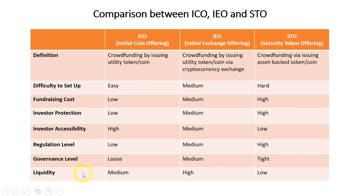Regarding liquidity for investors: ICO liquidity is relatively OK, while IEO offers the best liquidity because you can actually trade the tokens you acquired directly on the cryptocurrency exchange itself — you don't have to wait for the project team to find an exchange for you to sell or trade your tokens. For STO, it is a lot more difficult because you have to follow the country's rules, and there are only specific STO exchange platforms where you can trade those tokens. Those are the comparisons between ICO, IEO, and STO.